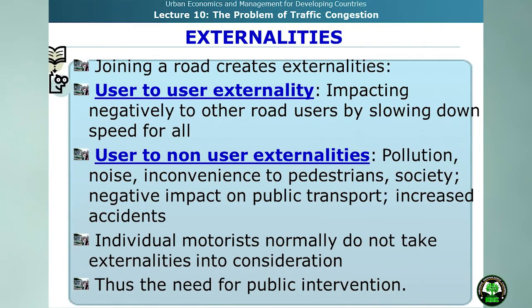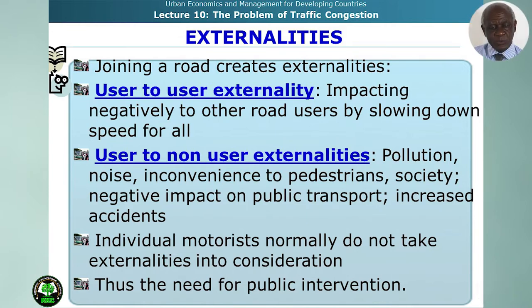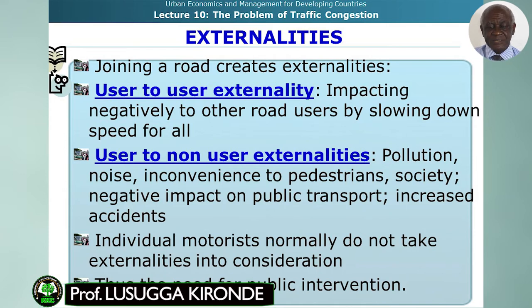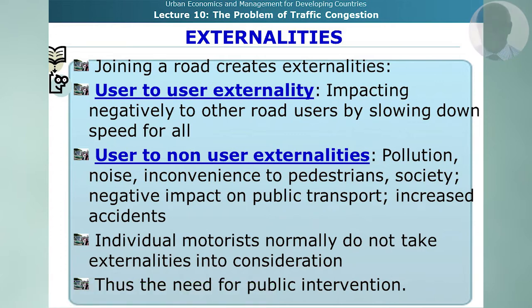Economists see traffic congestion as generating externalities. When a motorist joins the road, they create two types of externalities. The user-to-user externality negatively impacts other road users by slowing down speed for all. The user-to-non-user externality includes pollution, noise, inconvenience to pedestrians and society, negative impacts on public transport, and increased accidents. Individual motorists normally do not take externalities into consideration — hence the need for intervention by public authorities.